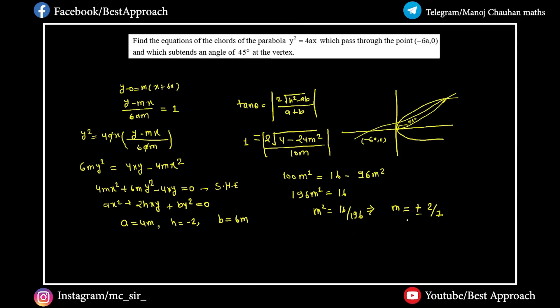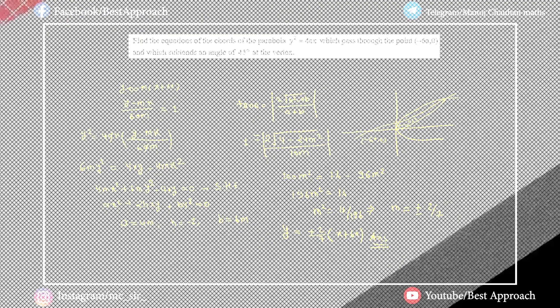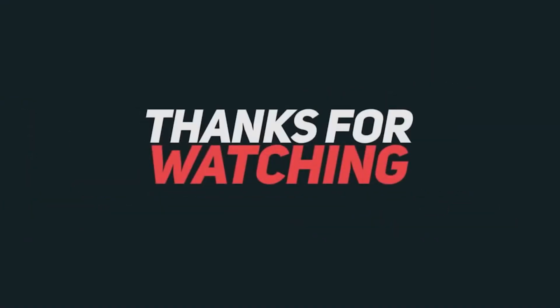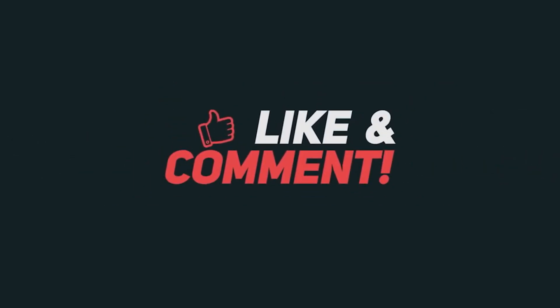Now we have to write the equation of the chord because we now know the slope. The equation of the chord is y equals (±2/7)x + 6am. So we have the equation of the chord.